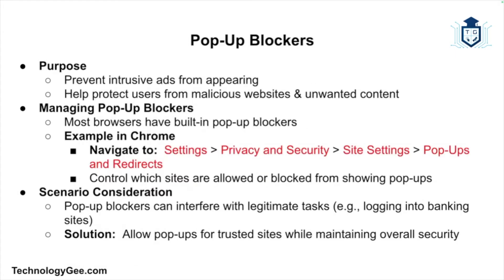Next, let's look at pop-up blockers. Pop-up ads can be intrusive and even lead to malicious websites, and most browsers include built-in pop-up blockers to prevent these ads from appearing. You can turn pop-up blockers on or off in your browser settings. In Chrome, go to Settings > Privacy and Security > Site Settings > Pop-ups and Redirects to manage which sites are allowed or blocked. While pop-up blockers are useful, they can sometimes interfere with legitimate actions such as logging into a banking site — in these cases, you may need to allow pop-ups from specific sites. Understanding how to configure pop-up blockers allows you to maintain a balance between security and functionality.